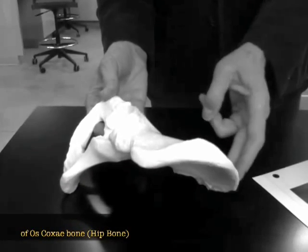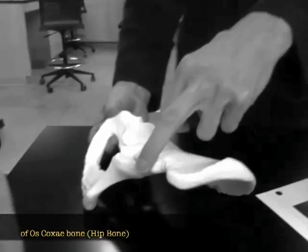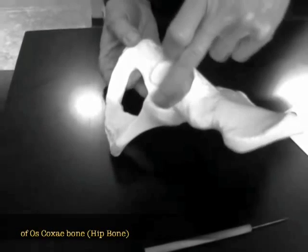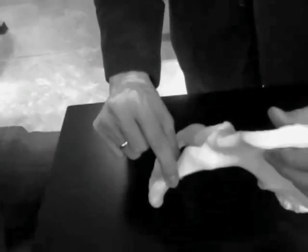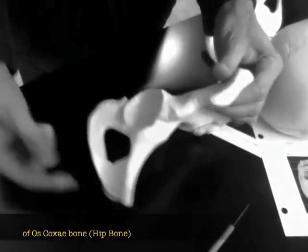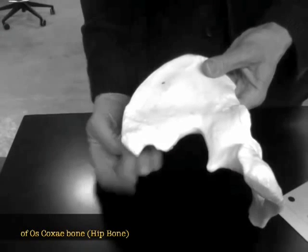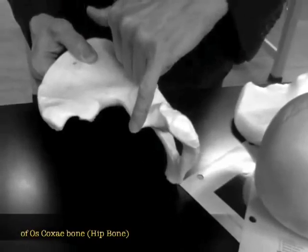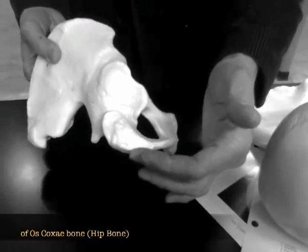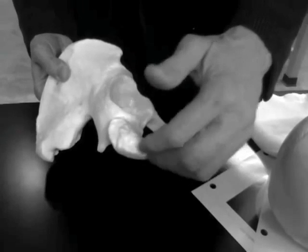Iliac crest, anterior superior iliac spine, anterior inferior iliac spine, acetabulum, acetabular notch, obturator foramen, superior ramus of pubic bone, inferior ramus of pubic bone. Posterior superior iliac spine, posterior inferior iliac spine, sciatic notch, greater sciatic notch, lesser sciatic notch, ischial spine, ischial tuberosity. The roughened area is your sit down bone, ischial tuberosity.